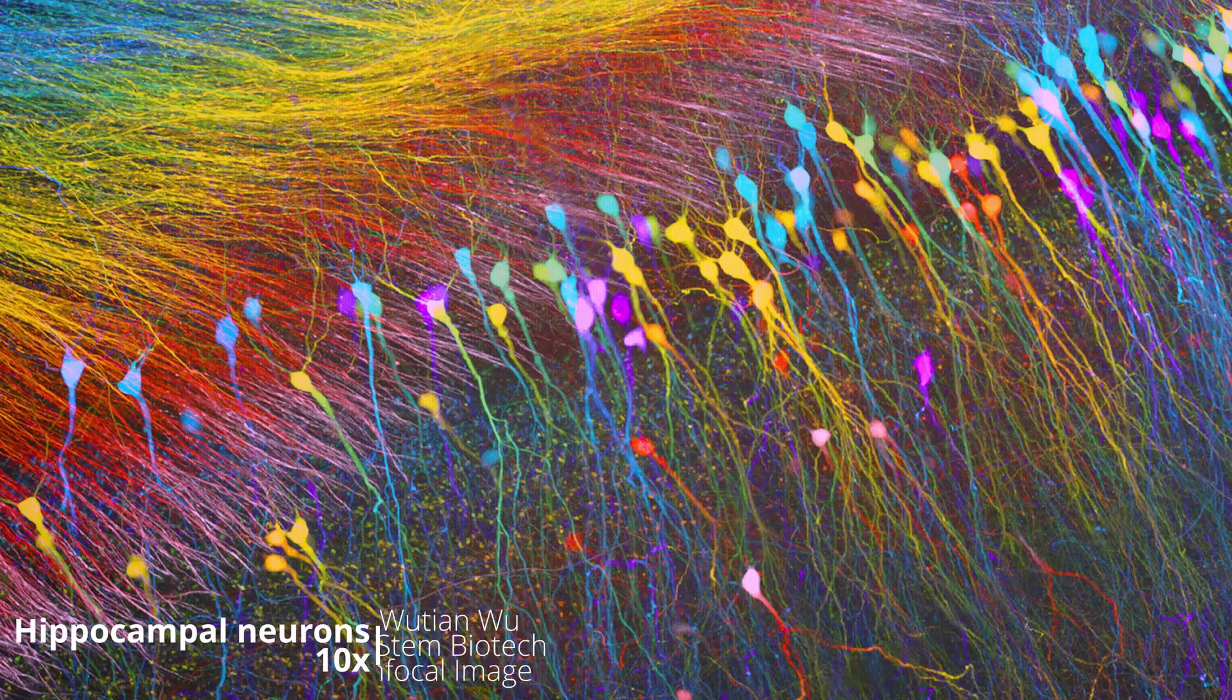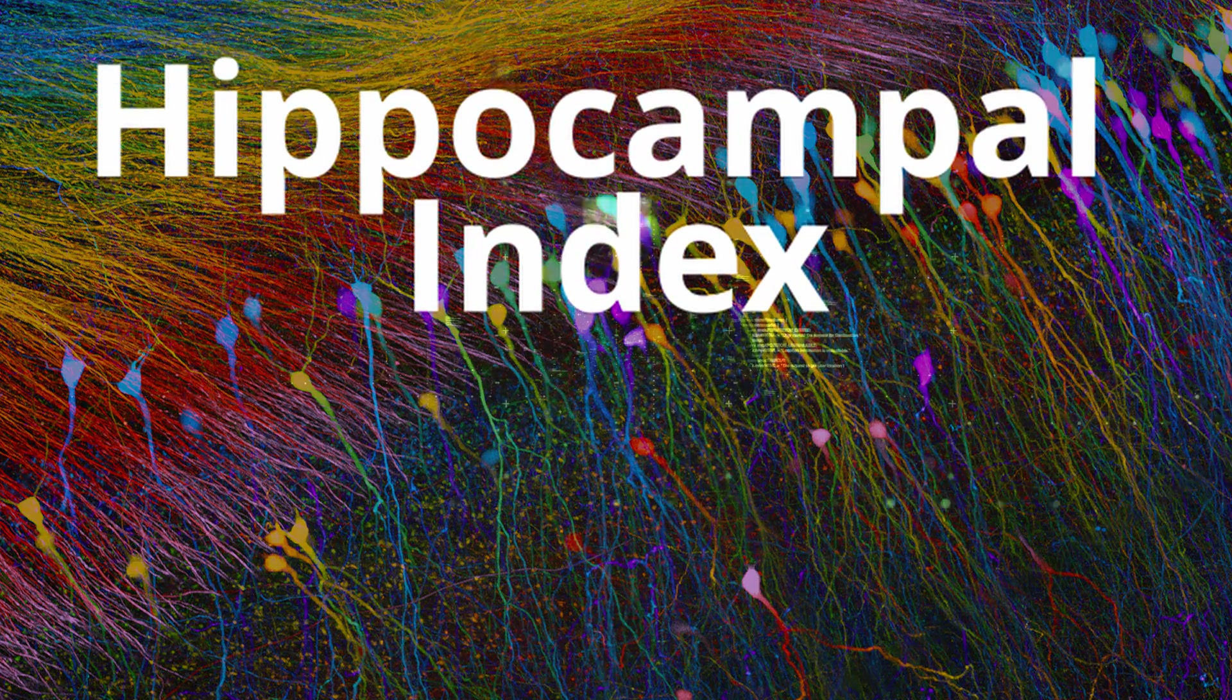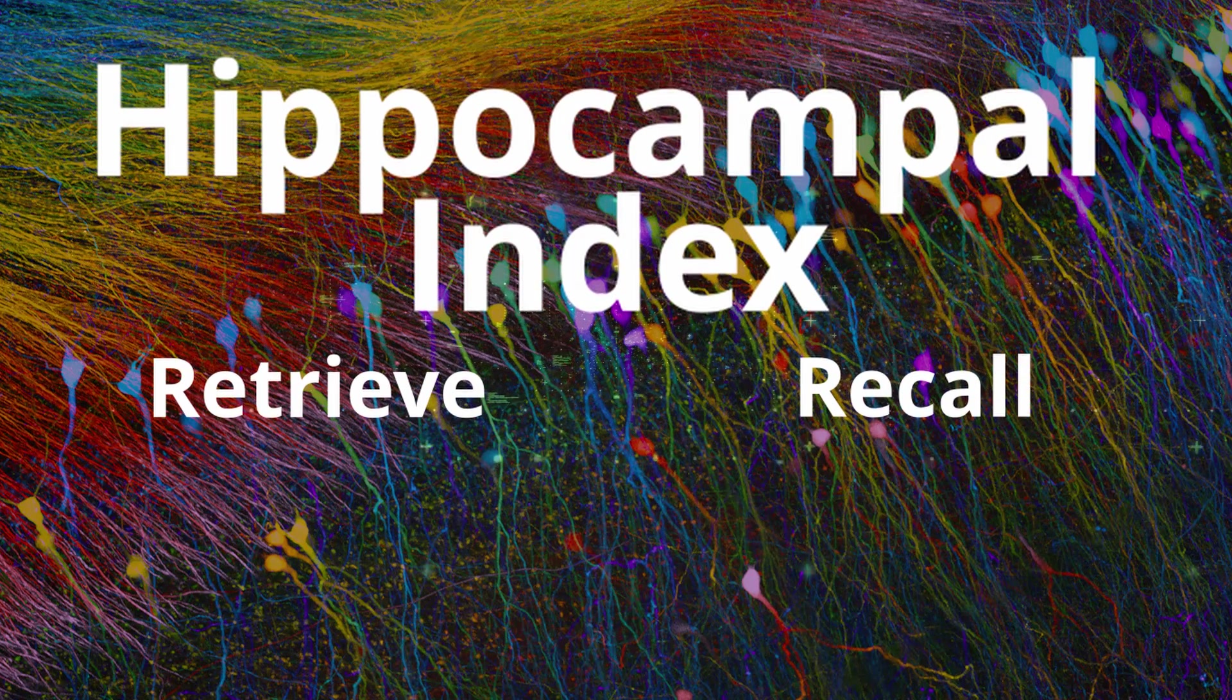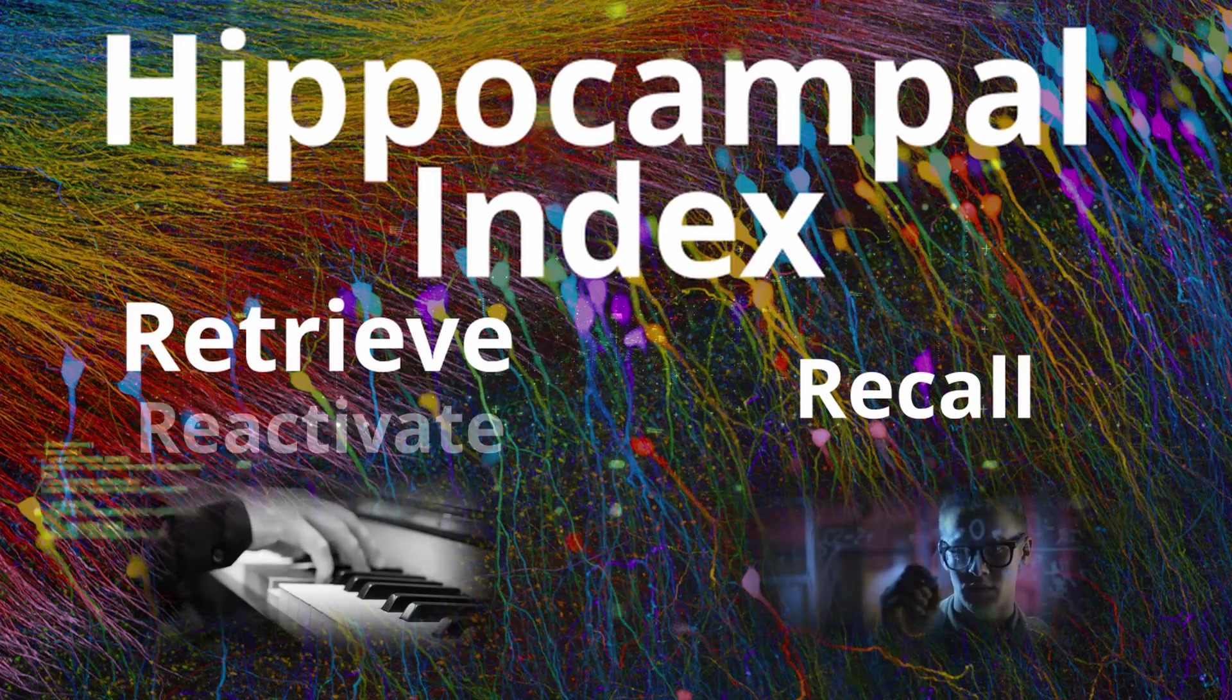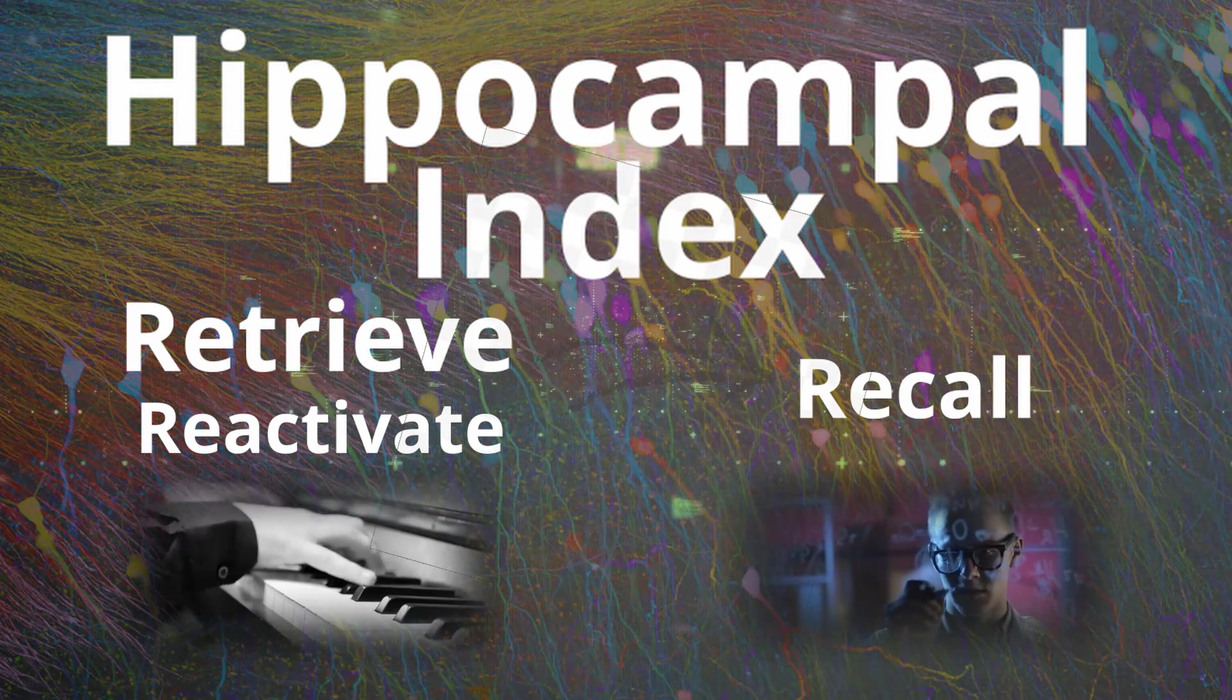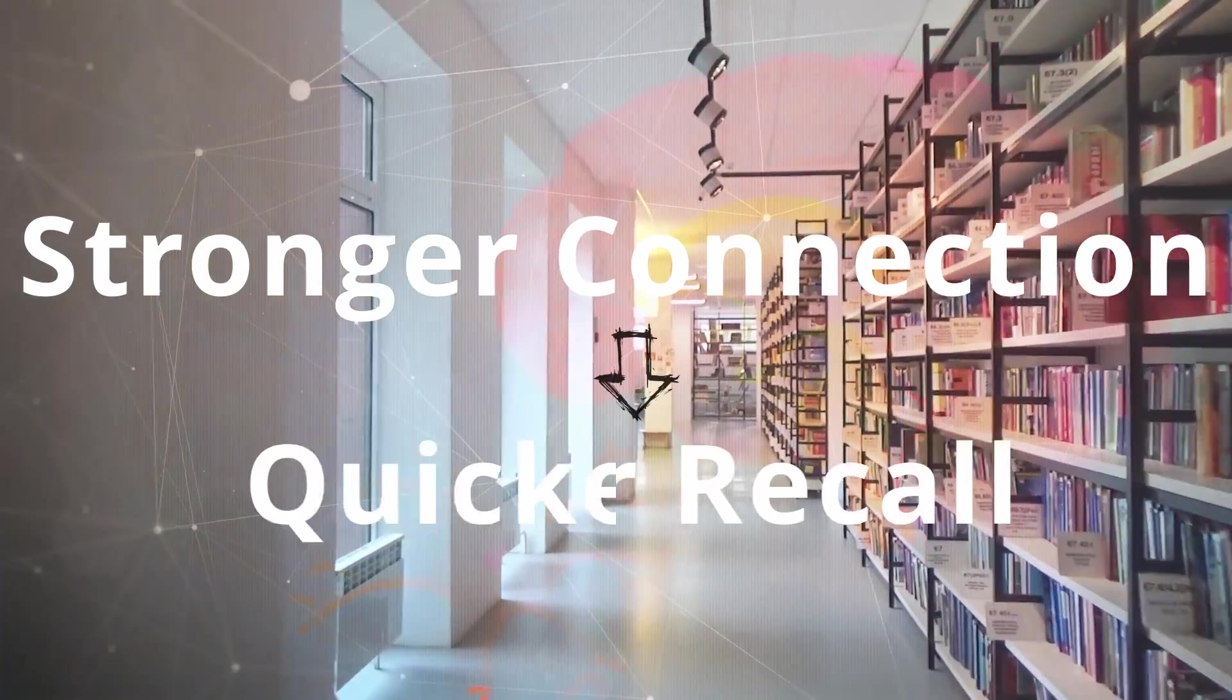All of the cells that make up the hippocampus will collectively act as an index. This is similar to how a computer index works, as it's able to retrieve and recall the information that is necessary for particular memories. In the case of playing piano or studying, the hippocampal index will retrieve and reactivate all of the distributed parts of the different processing areas associated with that memory. So essentially, the stronger the connections are between these neurons, the quicker you'll be able to recall what you wanted to remember.